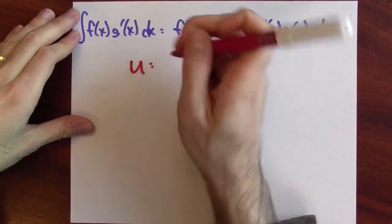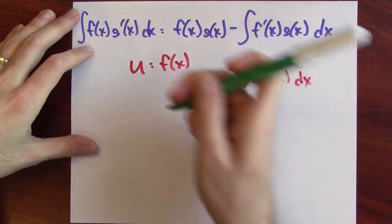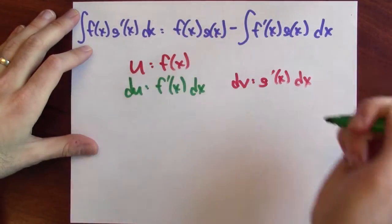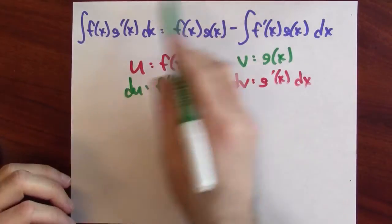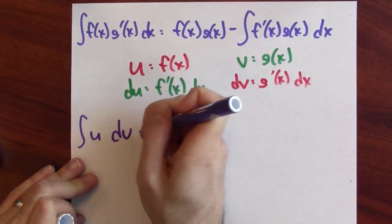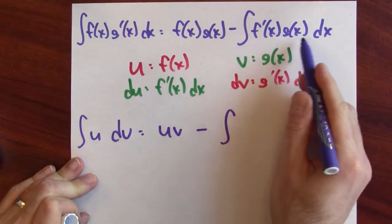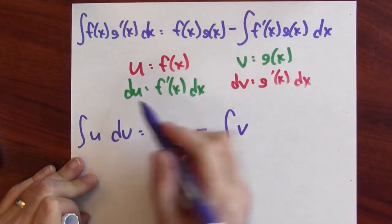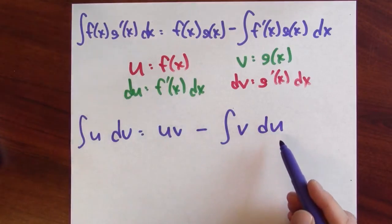It'll be easier to see what's going on if I make some substitutions. Let u = f(x) and dv = g′(x) dx. In that case, du = f′(x) dx, and one anti-derivative of dv is just v = g(x). Using these substitutions, this integral is ∫u dv, and it equals u·v minus the integral of v du. So now I've got: the integral of u dv = uv minus the integral of v du.